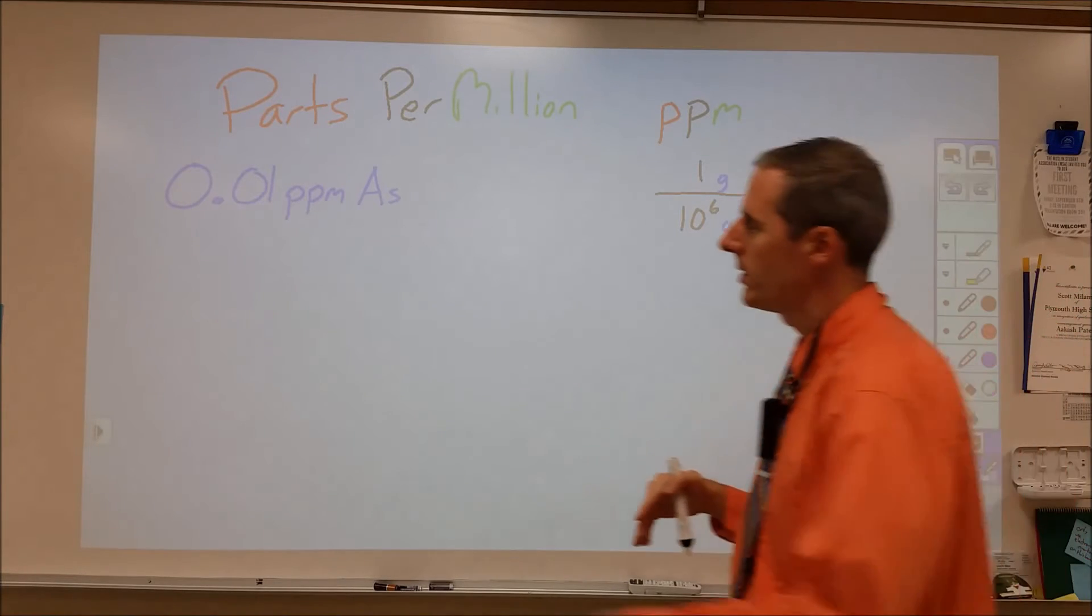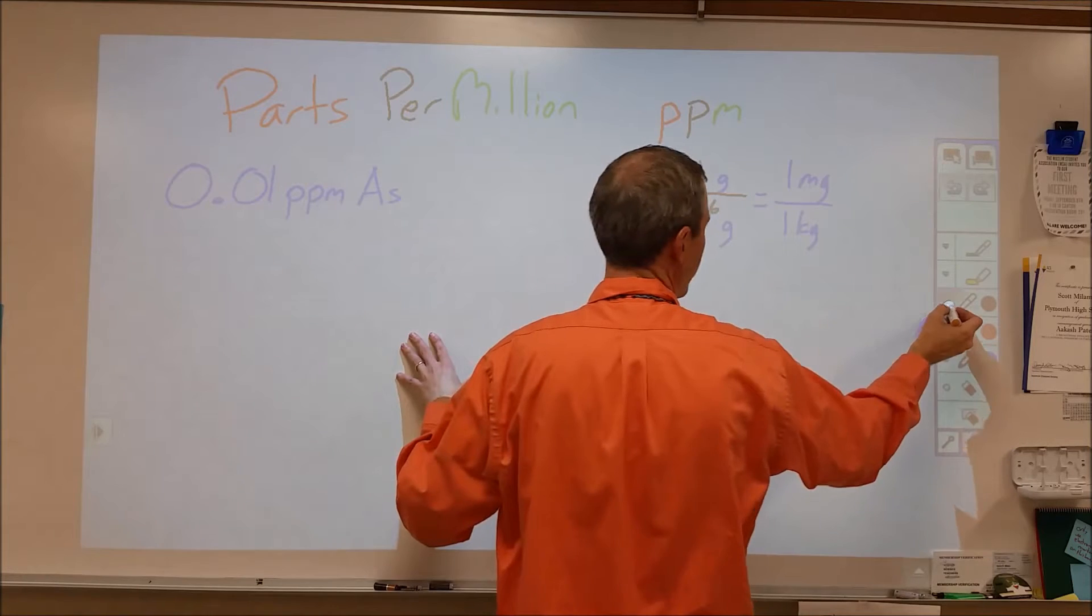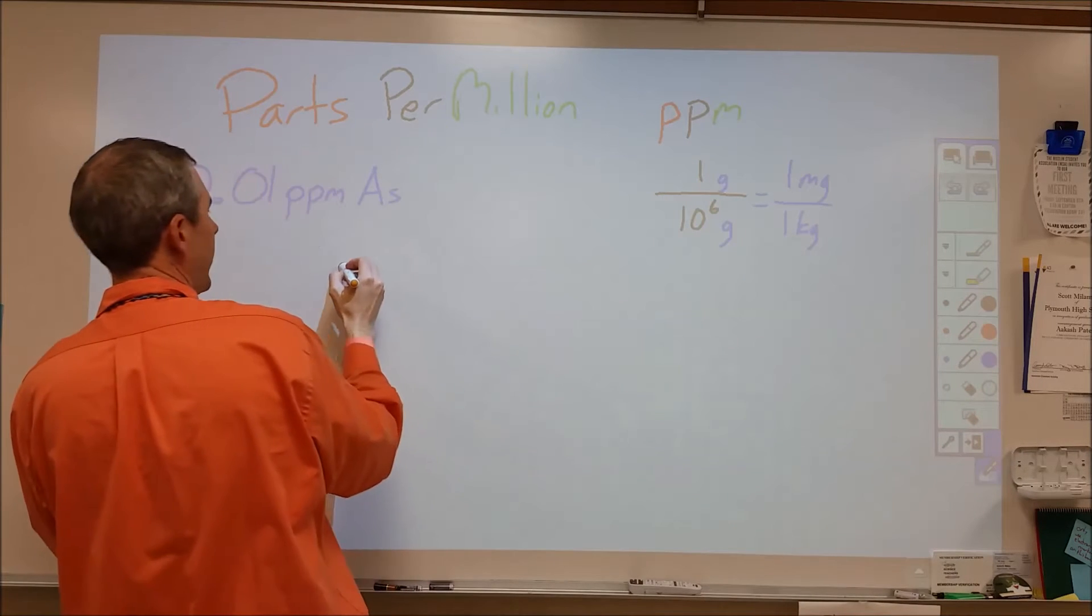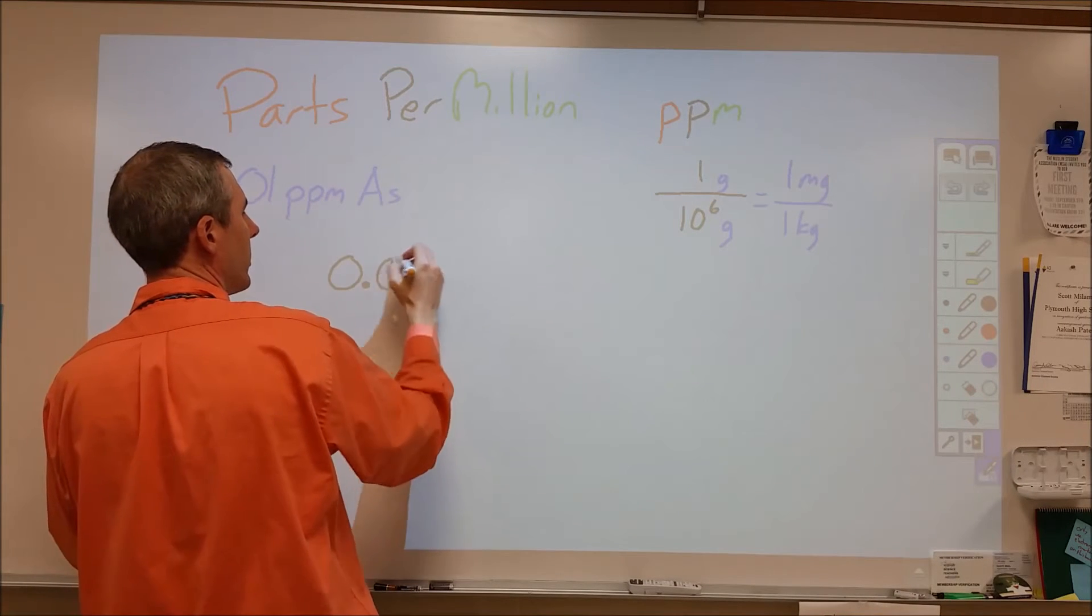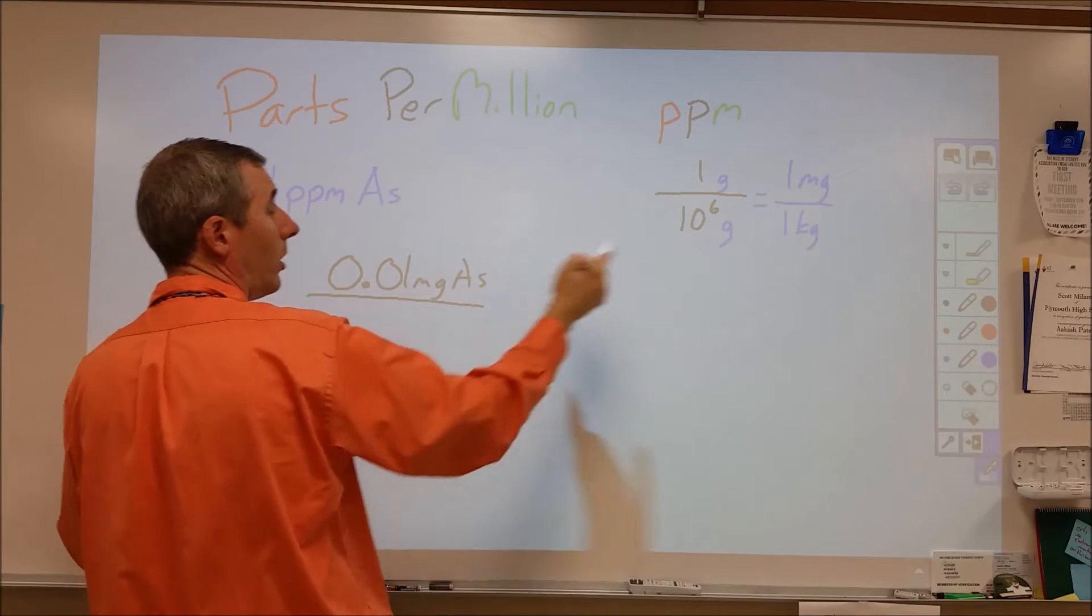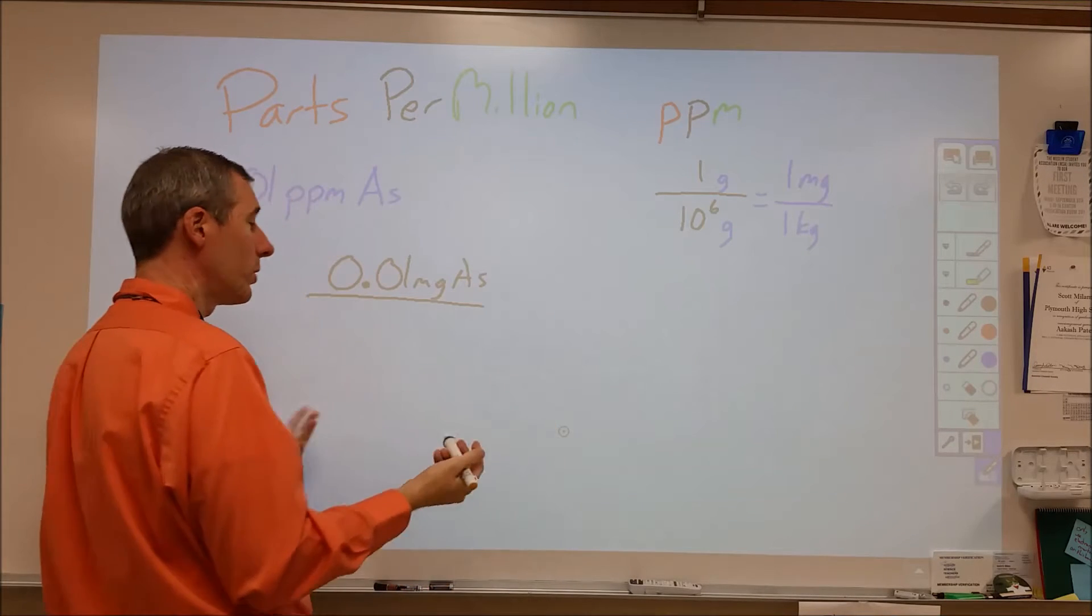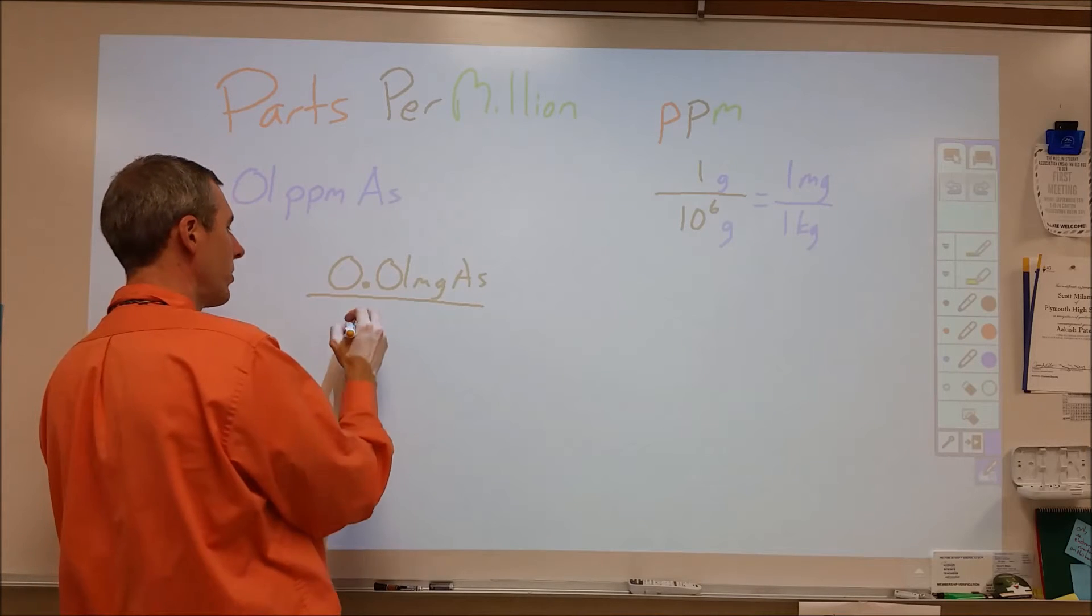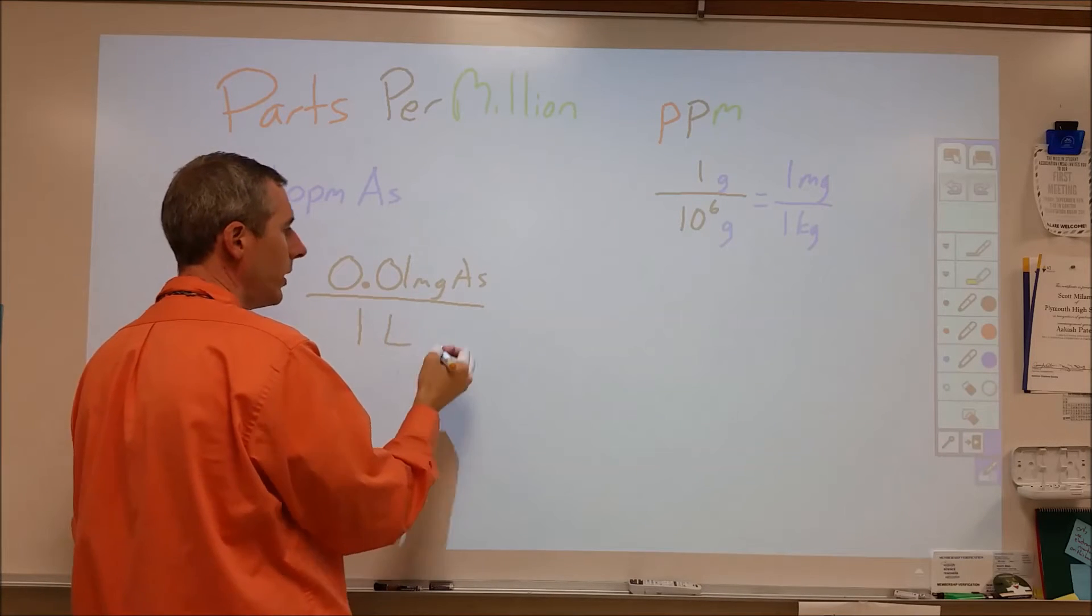When I see 0.01 parts per million arsenic, I would read that as 0.01 milligrams of arsenic per one kilogram of solution, which for most aqueous dilute solutions is going to be approximately one liter of solution.